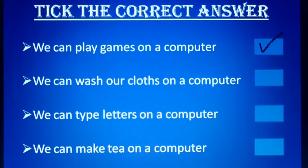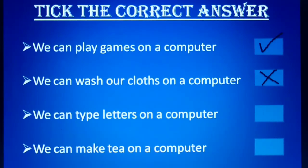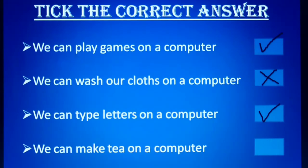Second one: we can wash our clothes on a computer. Is it possible to wash clothes with the help of a computer? No. So that is a wrong statement, and we have to cross it. And the third one: we can type letters on a computer. Yes, it is correct. We can type letters, forms, stories, documents, etc. on a computer. So we have to tick there.